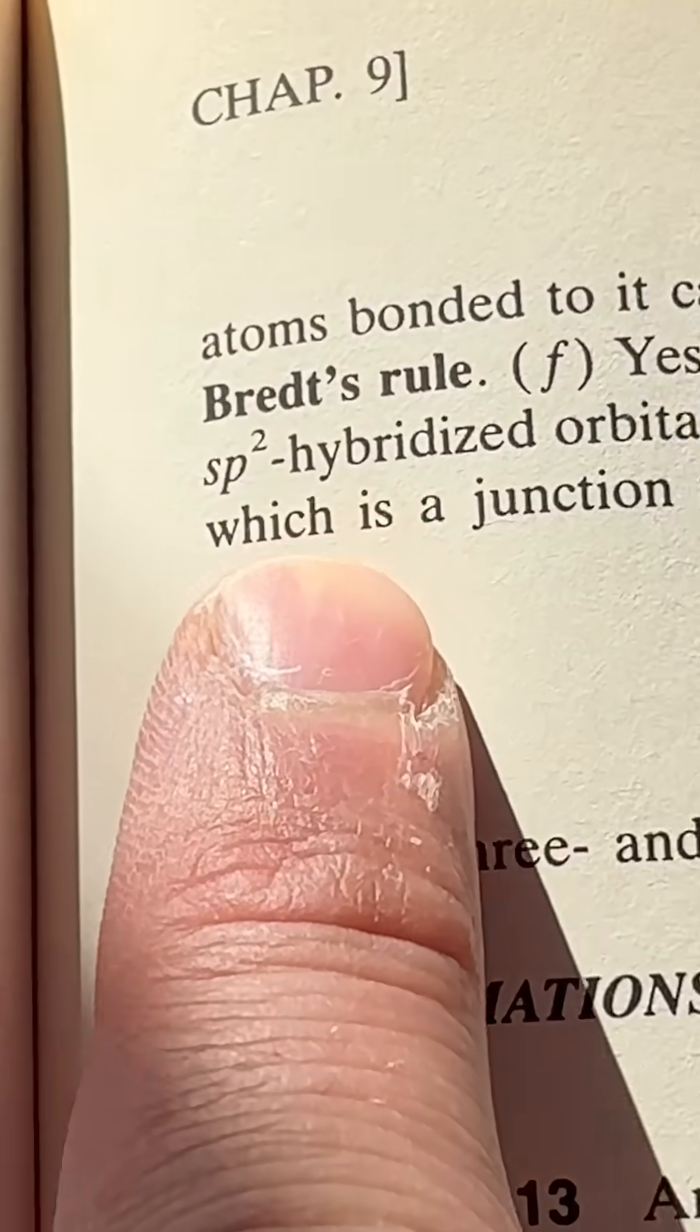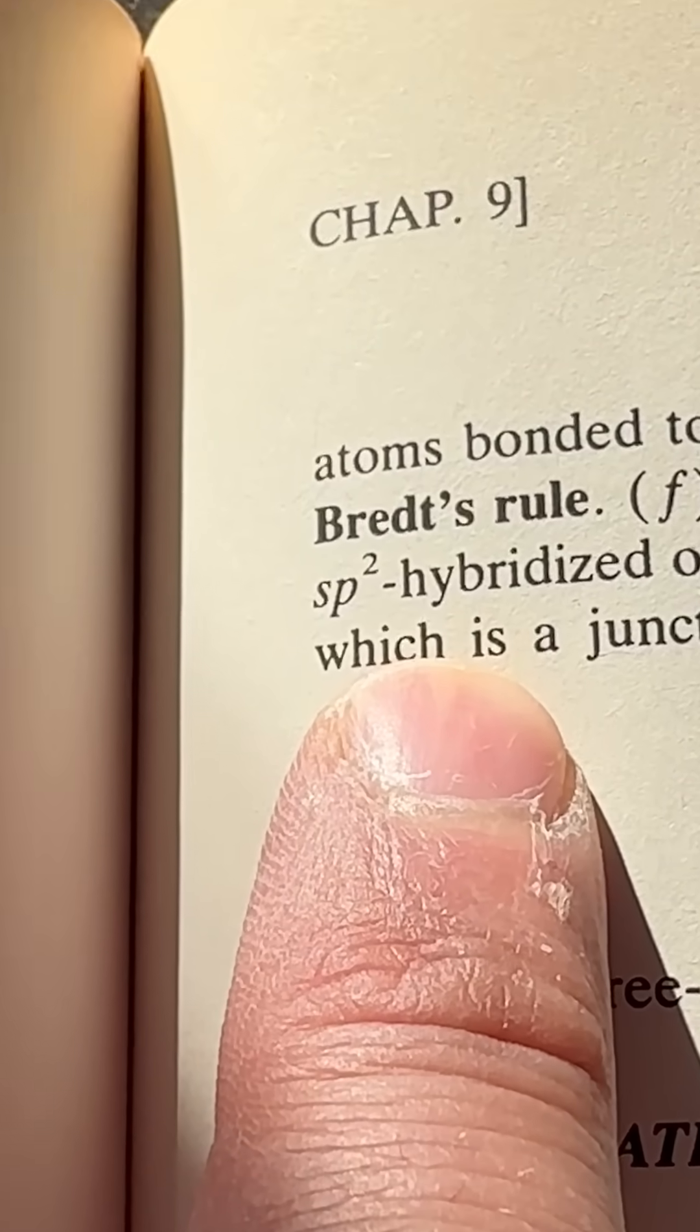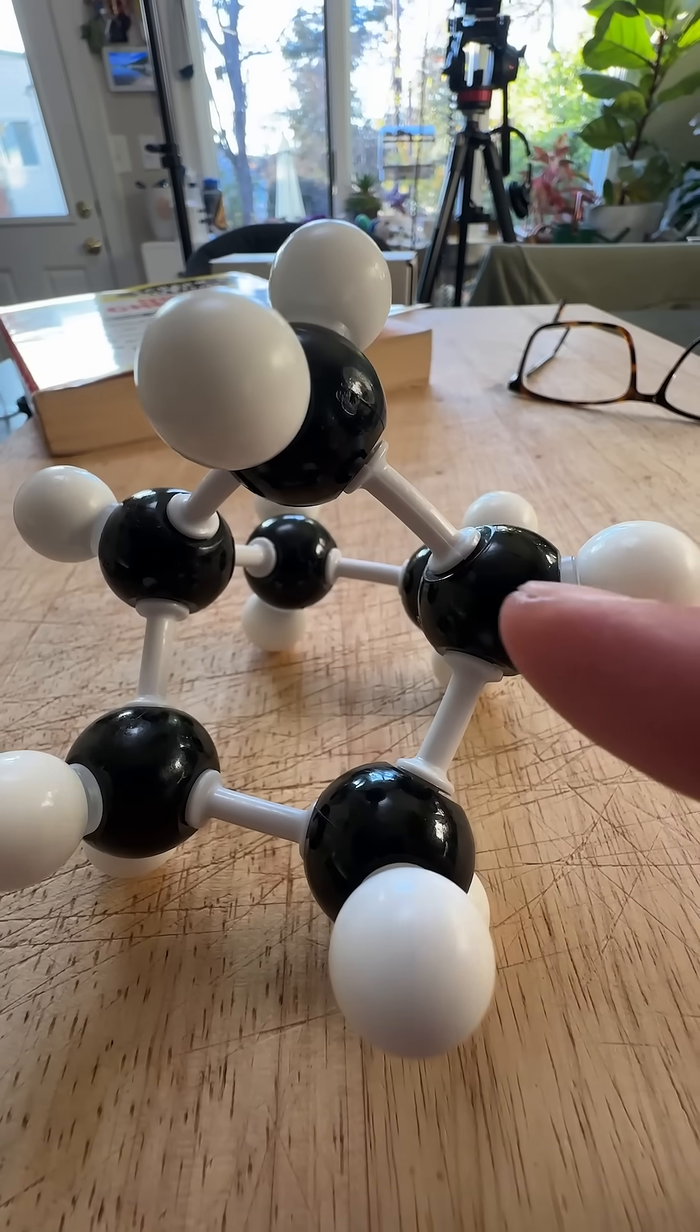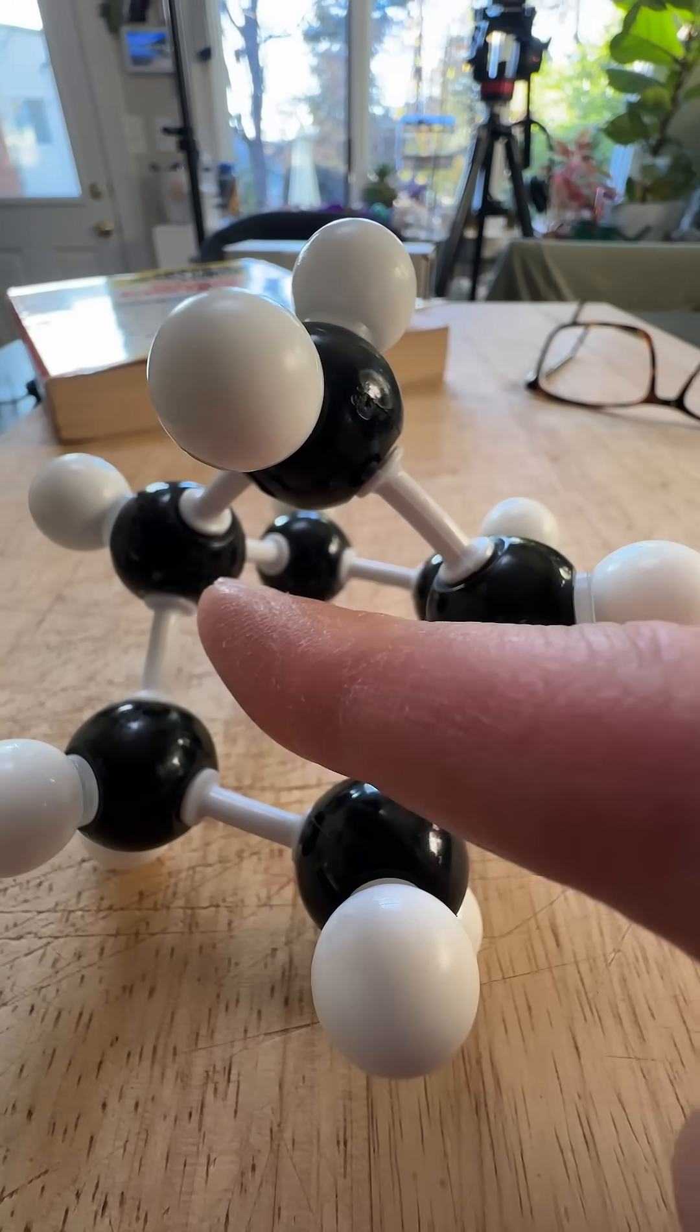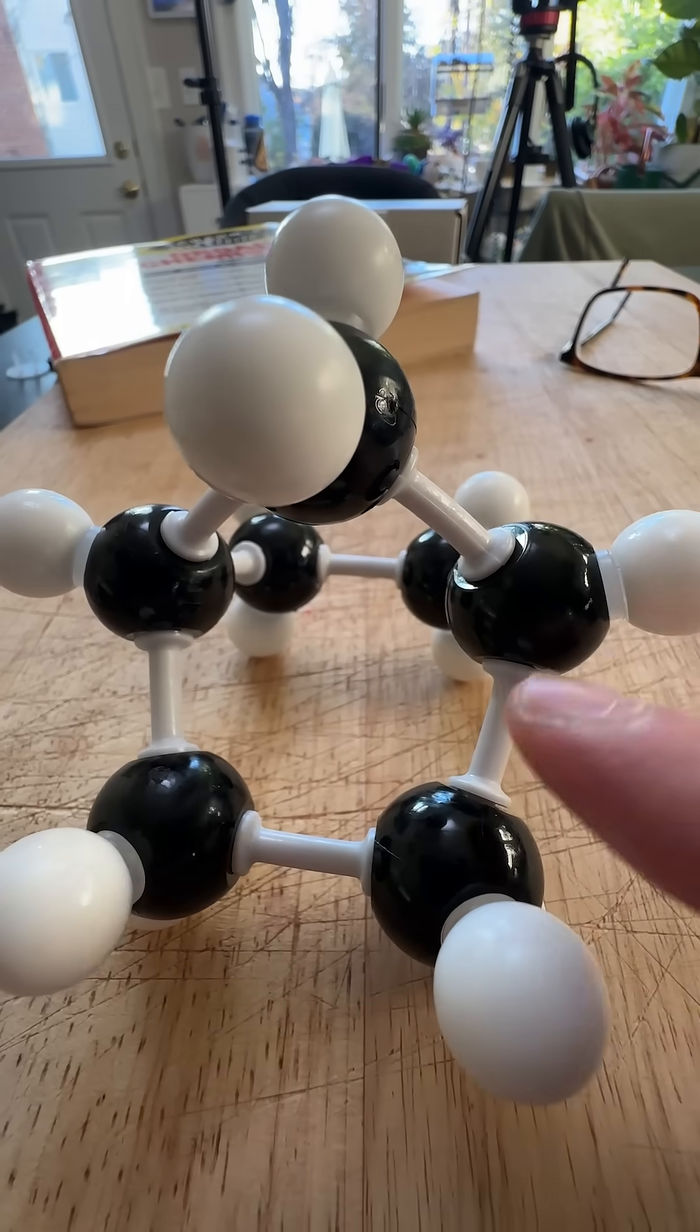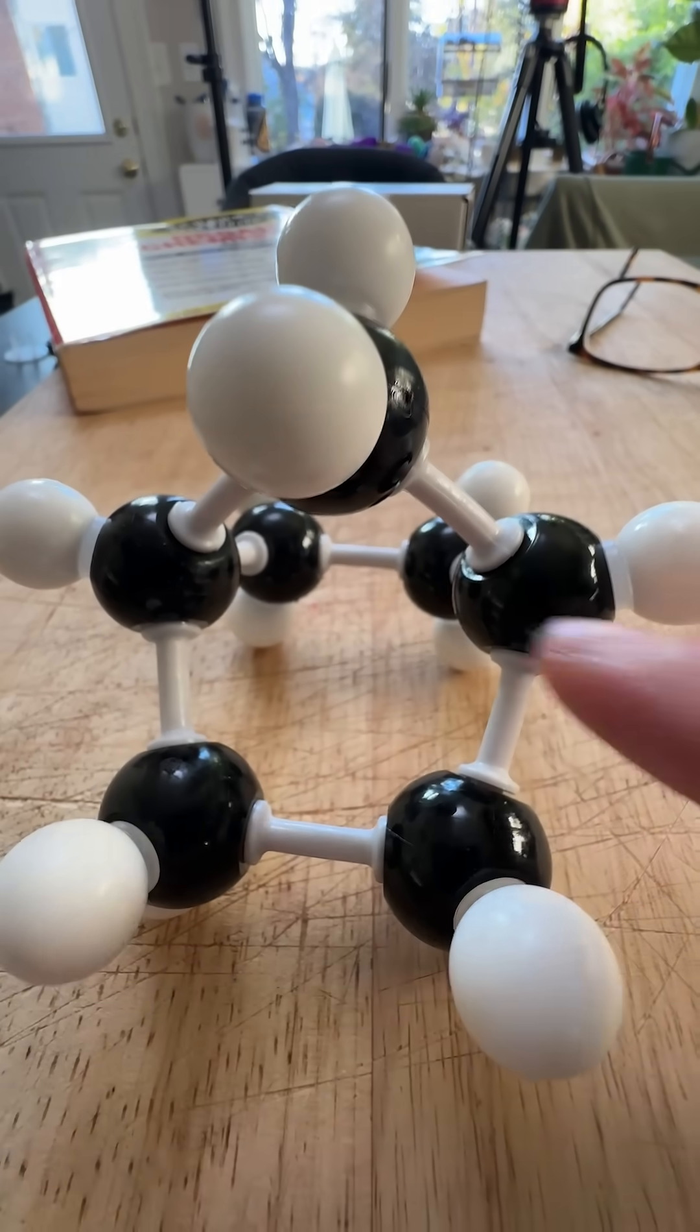This chemistry rule from 1924 was just proven wrong. Brett's rule says that in molecules like this one, where you have a bridge from one part of the molecule to the other, and where the ring down here is small, you cannot put a double bond on this carbon or this carbon.